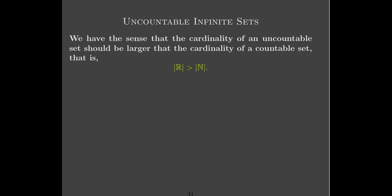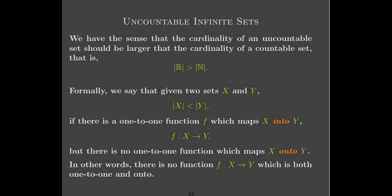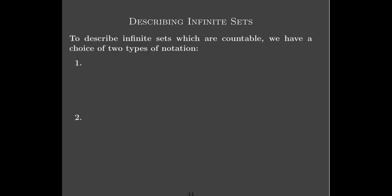We have the sense, and our notation suggests, that the cardinality of an uncountable set should be greater than the cardinality of a countable set. To formally express that: the cardinality of x is less than the cardinality of y if you can find a one-to-one function which maps all of x into y, but there's no function which maps x onto y. Certainly you have a function which maps the natural numbers into the real numbers — every natural number is a real number, so you could use the identity mapping — but that's not onto. So there's no function which is both one-to-one and onto, and that says the cardinality of x is less than the cardinality of y.